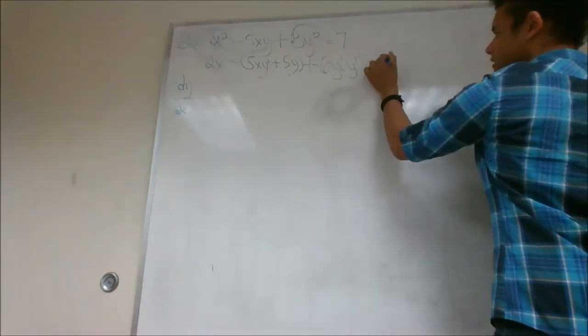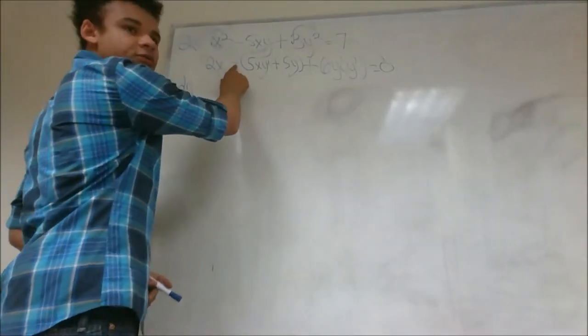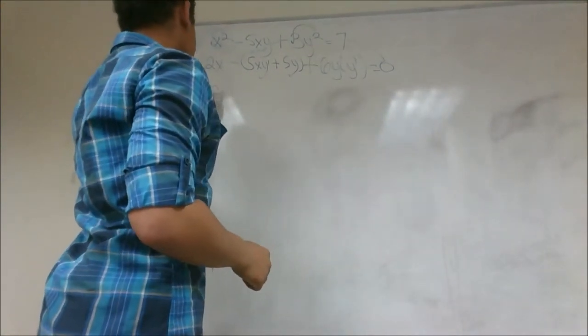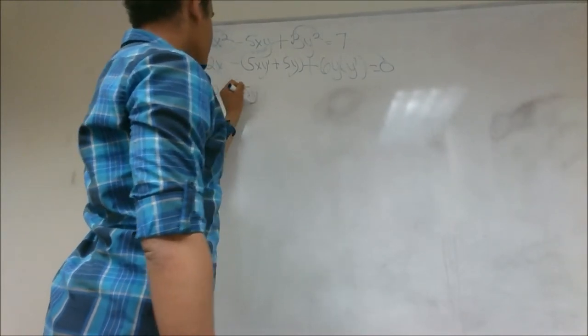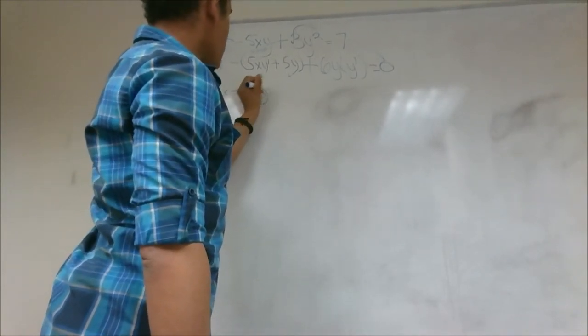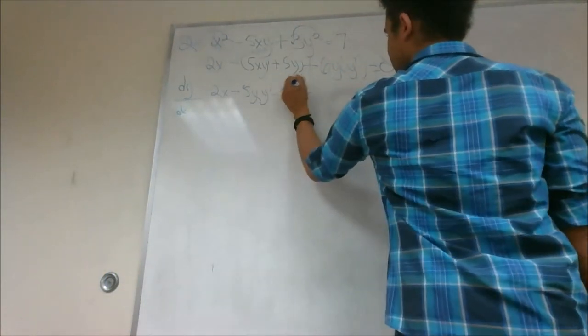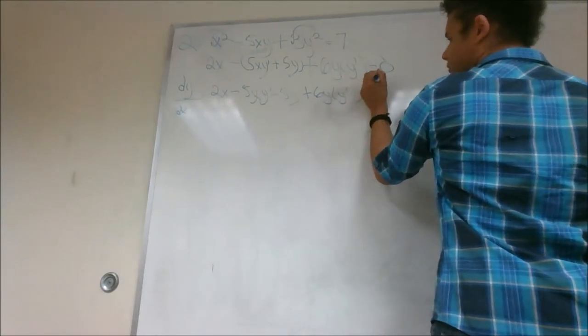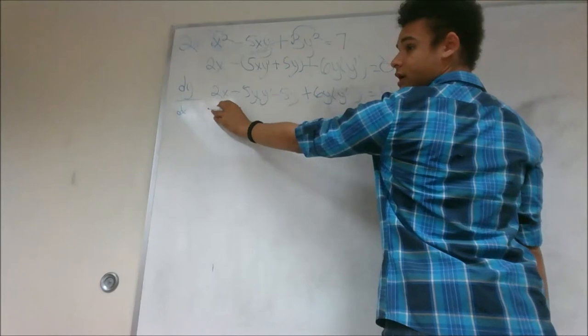Now that we've done this, we can simplify this further. We need to apply this negative to this parenthesis. So we're going to get 2x minus 5xy prime minus 5y plus 6y y prime equals 0. So this is our fully simplified differentiated equation.